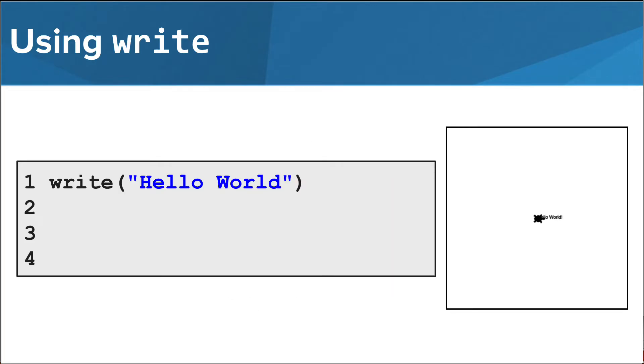So if we called this function with the text hello world, we would see that label appear at Tracy's location on the screen. It does look pretty small though, so let's look at a way we can change the size.